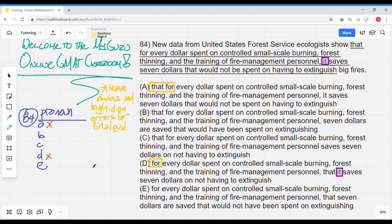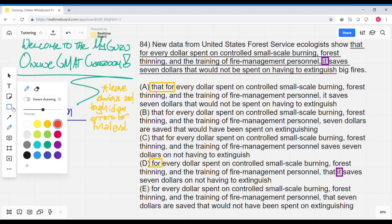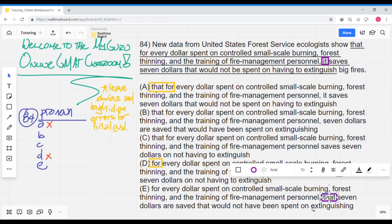Then with E, for every dollar spent on controlled small-scale burning, forest thinning, and the training of fire management personnel, that $7 are saved that would not have been spent on extinguishing. Well, in this case, that actually functions to a degree as a pronoun, and it's saying that specifically, it's some that $7, but that are going to be saved, which just contextually makes no sense and creates another incorrect pronoun.